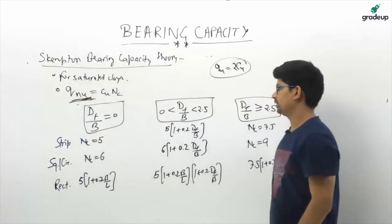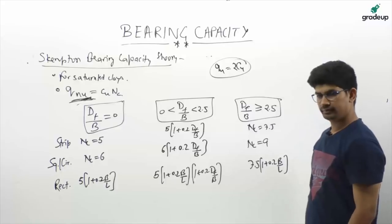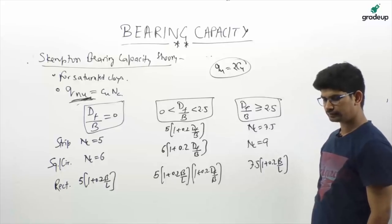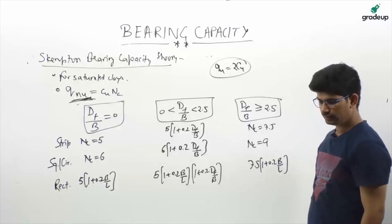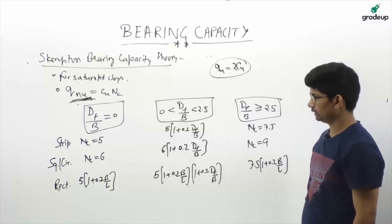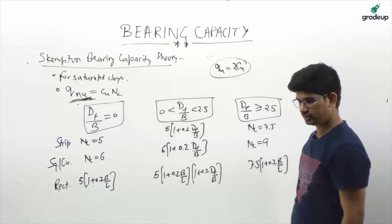For Cu, if unconfined compressive strength q_u is given, then Cu = q_u / 2. Calculate Df/B first to find which table to use, then identify the footing type to get Nc, and finally put these in Q_net_ultimate = Cu × Nc.